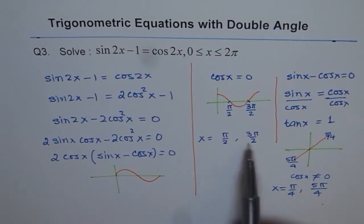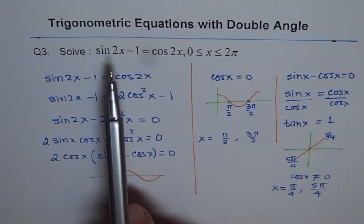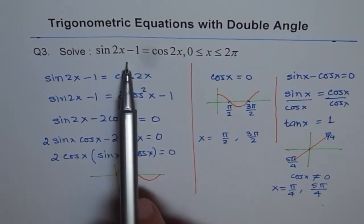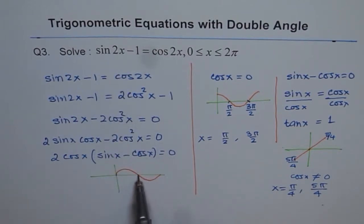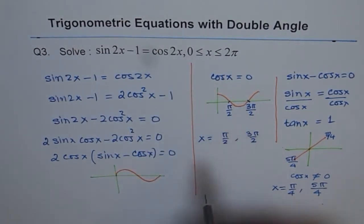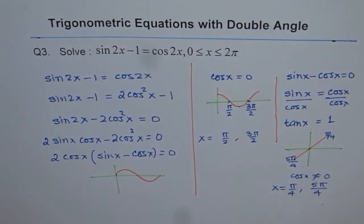Let me put 3π/2 in the original equation. I get sin of 2 times 3π/2. Two and 2 will cancel, I get 3π, which is 0, so I get minus 1 on the left side. For 2 times 3π/2, I get cos 3π, and cos 3π will be minus 1. So that satisfies the equation.